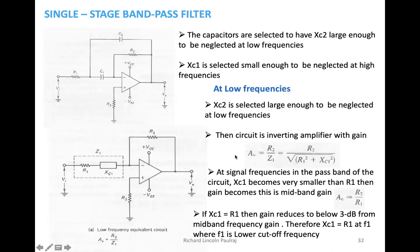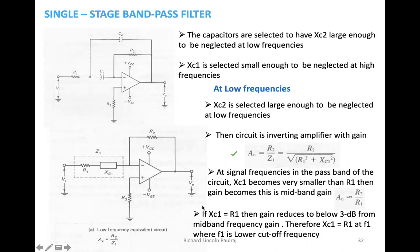At signal frequencies in the passband, Xc1 becomes very small compared to R1. When in the passband, meaning when the signal is actually passing from one point to another, Xc1 is too small and we take Av as R2 by R1 — we don't consider Z1 but just R2 and R1. We should make Xc1 equal to R1 only at the cutoff frequency.